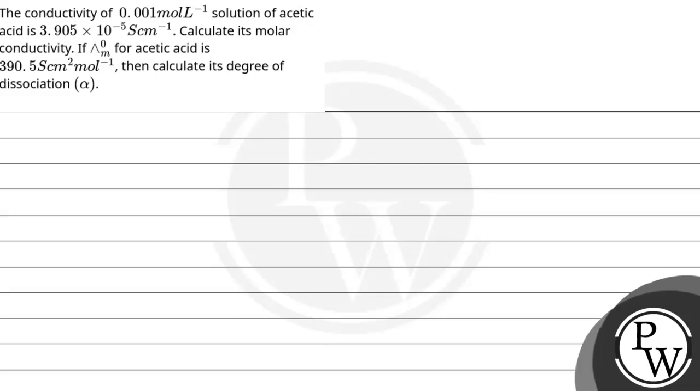Hello, let's see the question. The question is: the conductivity of 0.01 mol per liter solution of acetic acid is 3.9 × 10 raised to power minus 5 S cm⁻¹.